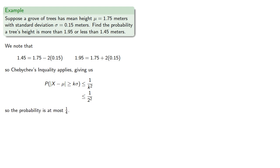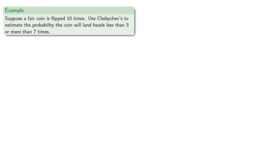Equivalently, the probability the tree's height is within the interval between 1.45 and 1.95 meters is the remainder, 1 minus 1 fourth, or 3 fourths. So, how accurate is Chebyshev's? Let's try it out in a case where we know the exact probability. Suppose we have a fair coin that we flip 10 times; we'll use Chebyshev's to estimate the probability the coin will land heads fewer than 3 or more than 7 times.